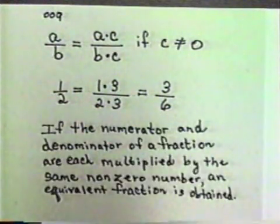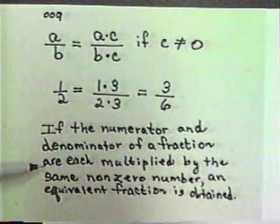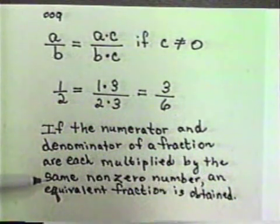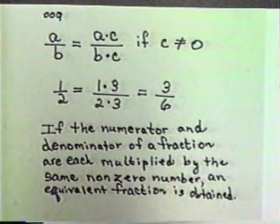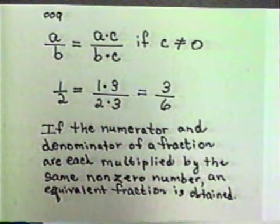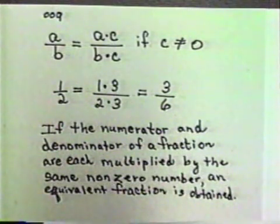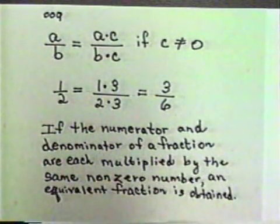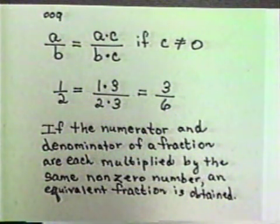So we can state: if the numerator and denominator of a fraction are each multiplied by the same non-zero number, an equivalent fraction is produced. If you multiply both the numerator and the denominator by the same non-zero number, you'll get a new fraction with a new denominator and a new numerator, but that new fraction will mean the very same thing as your original fraction. What we're doing is building up our fractions — making them have a bigger denominator and numerator — but still coming up with something equivalent to what we started with.